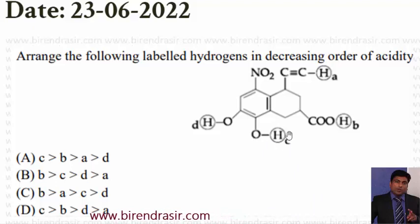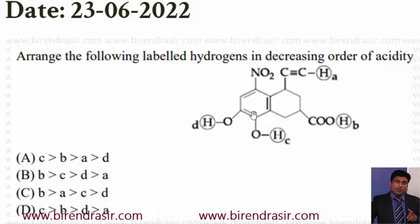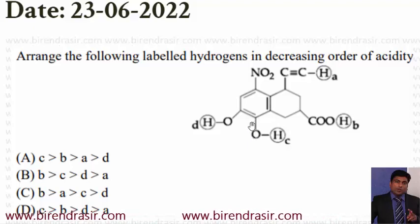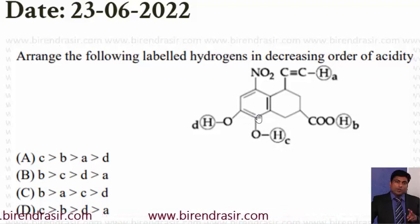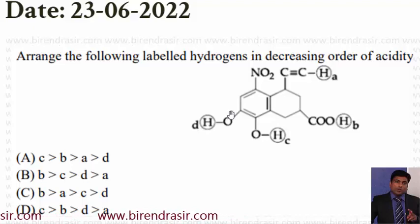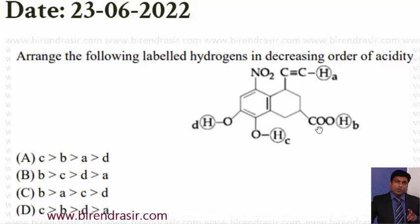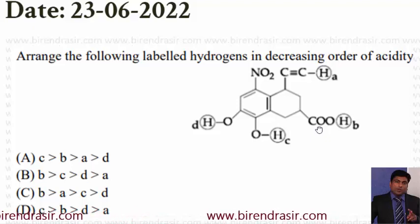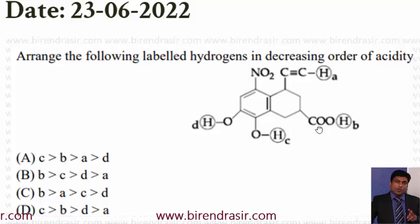If you see here, this hydrogen — this is phenolic hydrogen. C is phenolic hydrogen. This D is also phenolic hydrogen. This COOH — this is carboxylic acid. And this HA — this is terminal alkyne. So, out of these four, it is obvious that carboxylic acid H is more acidic.